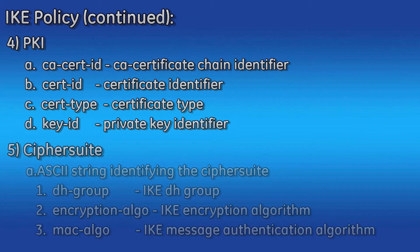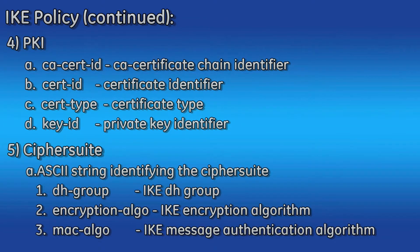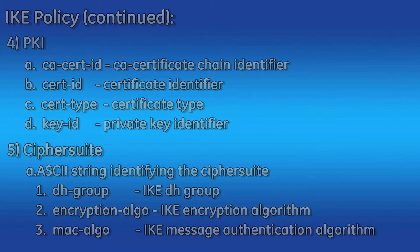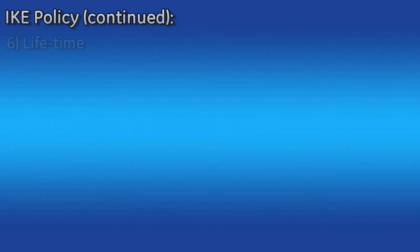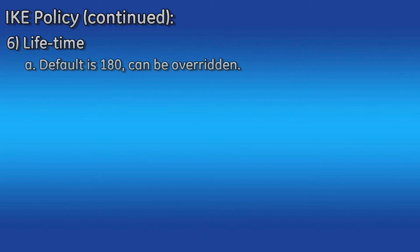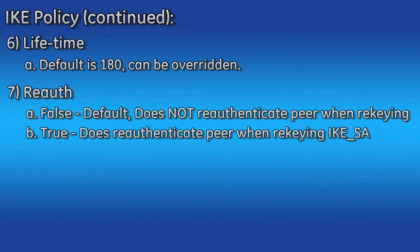Under cipher suite, you will first give it a name, as you can support more than one set of configurations. The cipher suite you create will depend on the equipment you are connecting to. For example, if the IPSec gateway on the other side can only support AES-128 encryption, you will need to set the encryption algorithm to AES-128CBC. Both sides of the tunnel must match. The IKE policy lifetime can be left at the default of 180 minutes, or set within the range of 15 to 1440 minutes. The re-auth parameter, when set to true, forces the peer to re-authenticate when the tunnel is re-keyed; it is false by default.